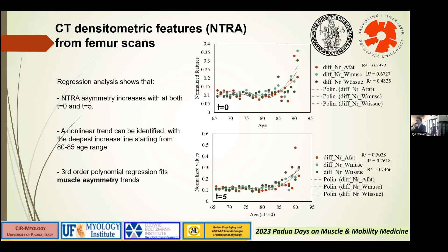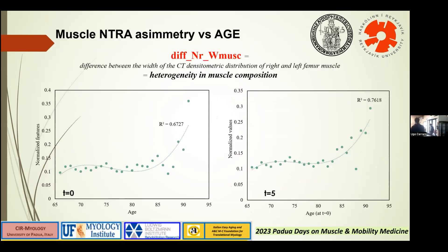What we discovered is that there is a trend in the evolution of these parameters with age, and this trend is an increasing trend following a non-linear law. We were able to fit the evolution with a third-order polynomial regression, and we can see a steep increase starting from 80 years old. This is true for all three types of features — fat, muscle, and connective tissue. Focusing on the width of the muscle parameter, which is a measure of heterogeneity in muscle composition, we can relate this to a physiological aspect of the tissue under investigation.